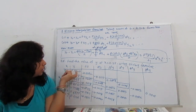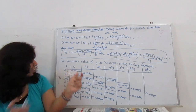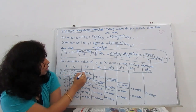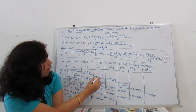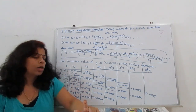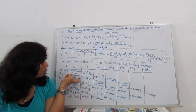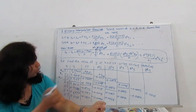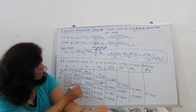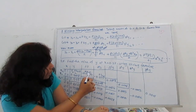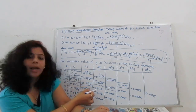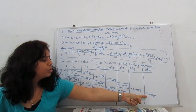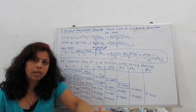We construct the central difference table. For Δy, we compute differences such as Δy₋₂, then Δ²y₋₂, and so on. For example, 0.9608 minus 0.9900 gives one difference value; then each successive difference is computed from the row above. We continue constructing the table until the last difference value Δ⁶y = 0.0001.